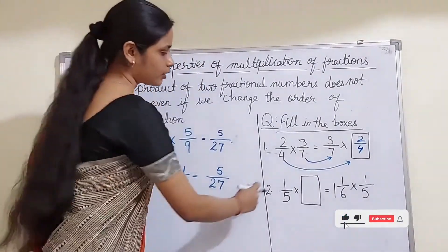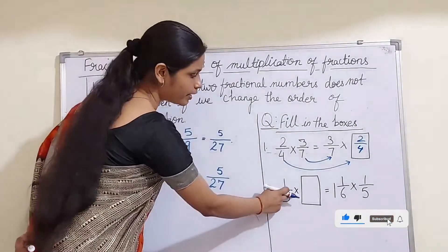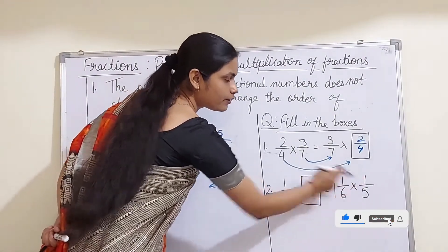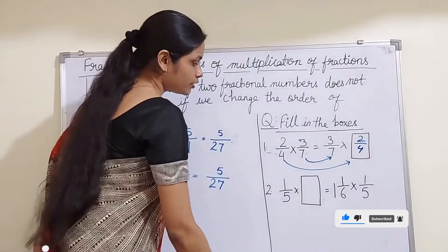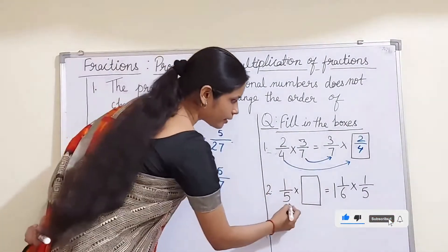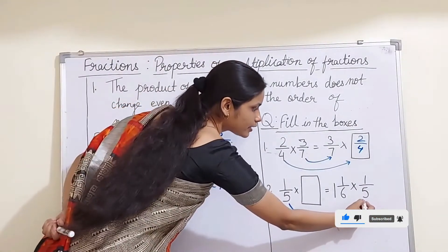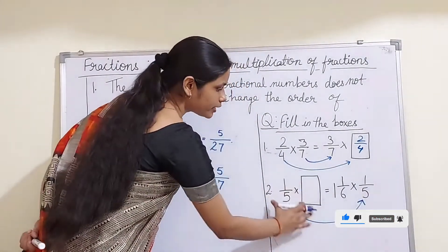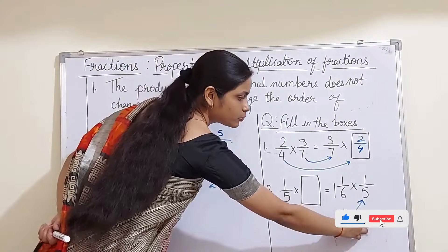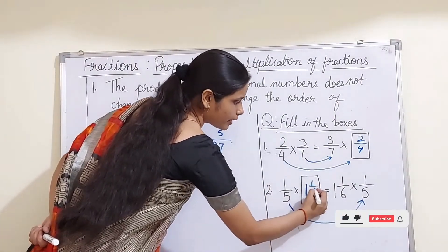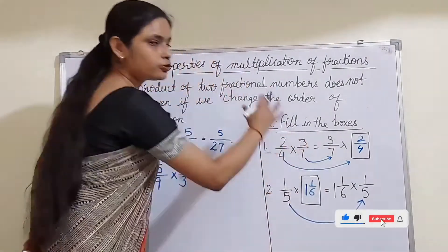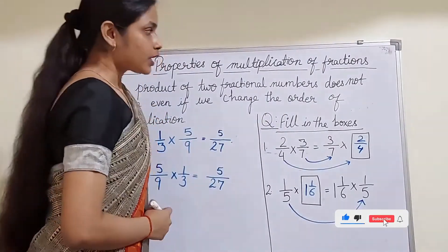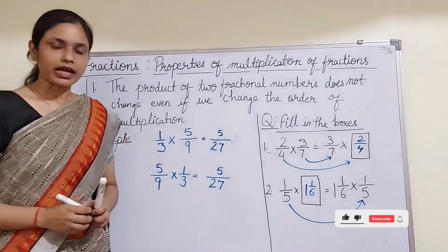Now let us do one more question. Here, 1/5 multiplied by a missing number will be equal to 1 whole 1/6 multiplied by 1/5. Check which fraction number is already there: 1/5 is on the left side and also on the right hand side. The missing number should be 1 whole 1/6. Simply by using the property of multiplication we can solve this question. This was all about the first property.